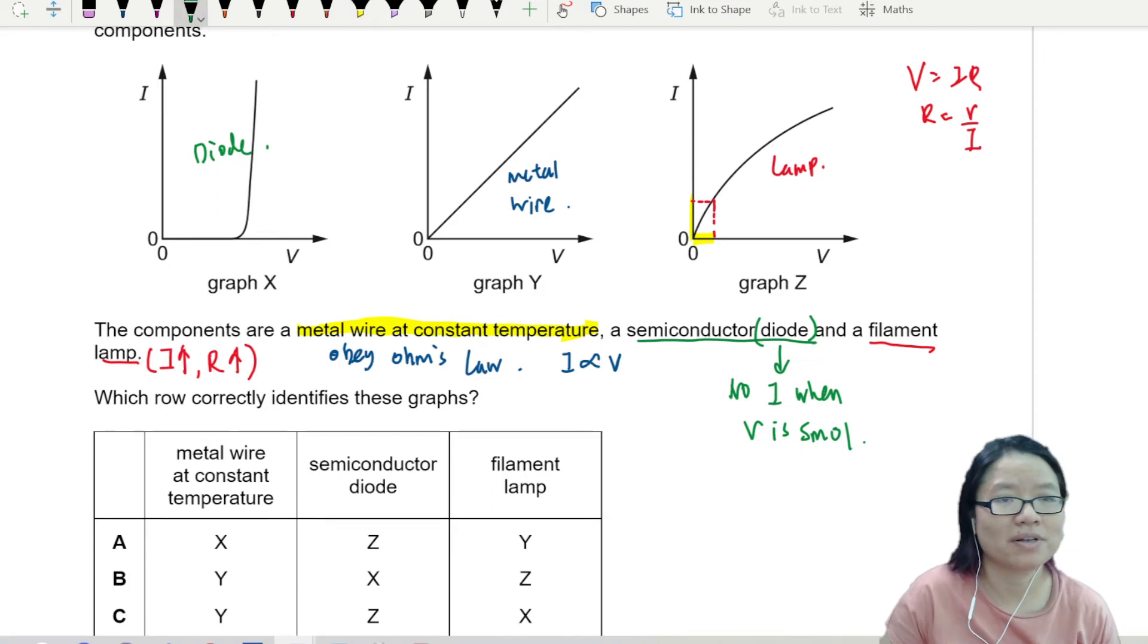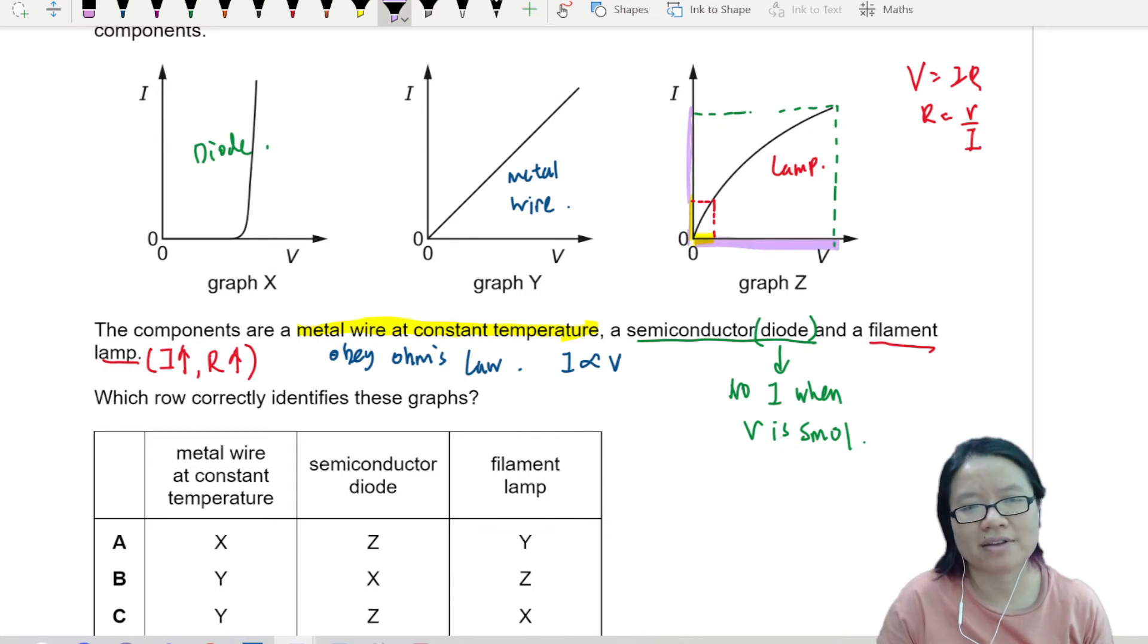Then for the second one, as I extrapolate this to the maximum point here, this one is about equal. So you can tell that the ratio here, the ratio of V over I here is smaller, greater here.